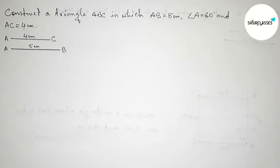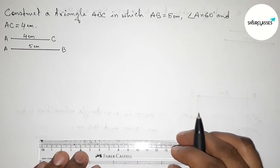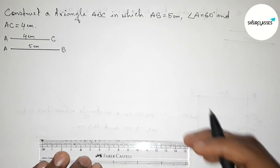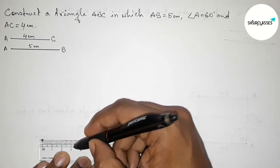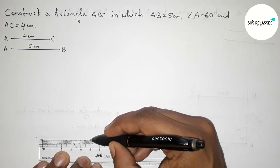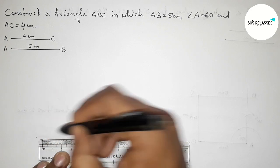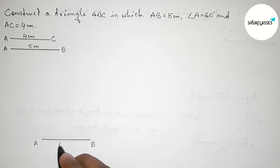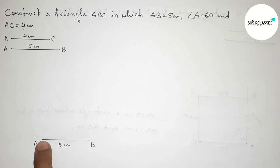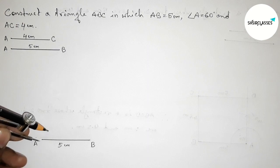Now we have to draw side AB equals to 5 centimeter. Starting from zero, this is the 5 centimeter line segment. Taking point A and point B, so AB equals to 5 centimeter. Now drawing a 60 degree angle at point A.